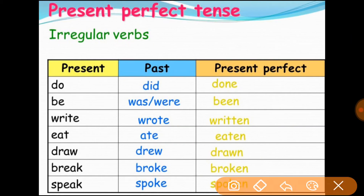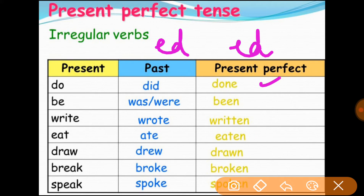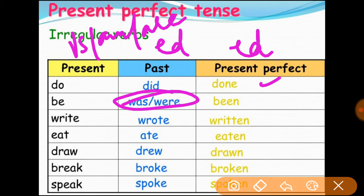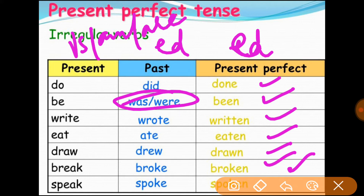Next, irregular verbs. Some verbs are irregular — they don't simply add -ed. For example: do, did, done. The verb 'be' — in present tense its forms are is, am, are; in past tense: was, were; and the third form is 'been.' Other examples: write, wrote, written; eat, ate, eaten; draw, drew, drawn; break, broke, broken; speak, spoke, spoken. For regular verbs, you can simply add -ed to form the past participle.